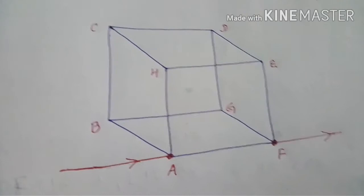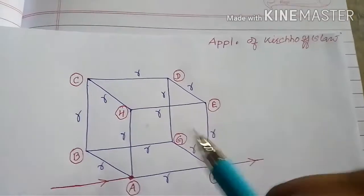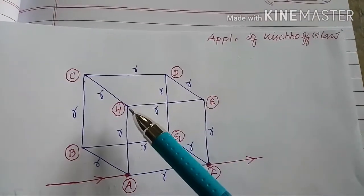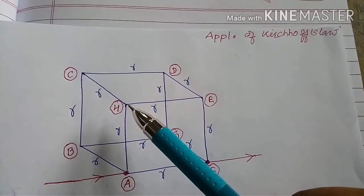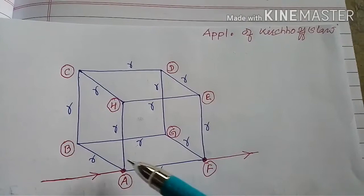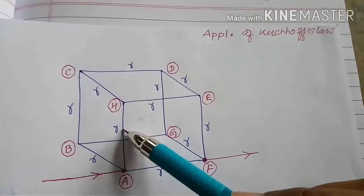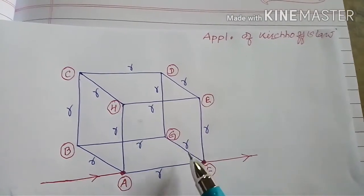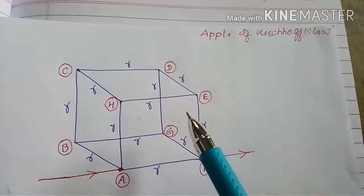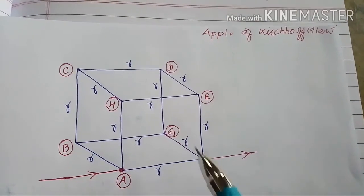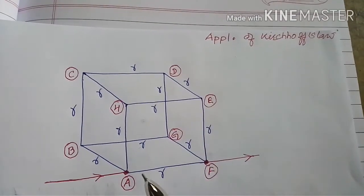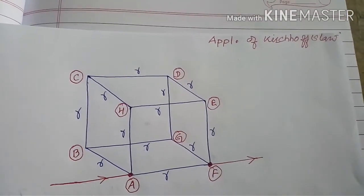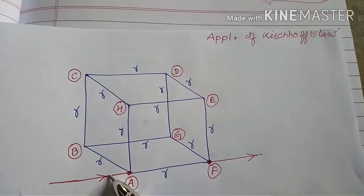The corners of the cube are marked a, b, c, d, e, f, g, h — there are eight corners in a cube. Each edge has resistance small r, and all are identical. This is a simple problem to start with; you can assume different resistances in different branches as you advance. We need to analyze the current flowing in each branch.